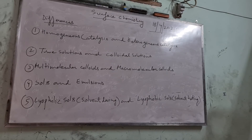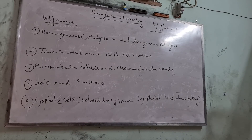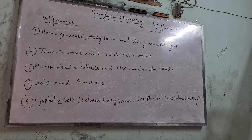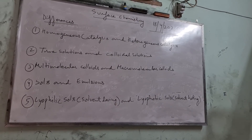Next is the difference between colloids (sols) and emulsions. Colloids have a solid as the dispersed phase and liquid as the dispersion medium. In general, colloids can have dispersed phase and dispersion medium as solid, liquid, or gas. In emulsions, both the dispersed phase and dispersion medium are always in liquid form. Emulsions are of two types: oil-in-water and water-in-oil.